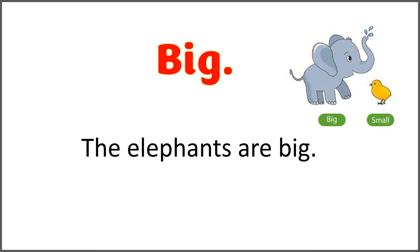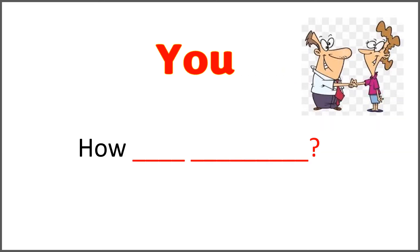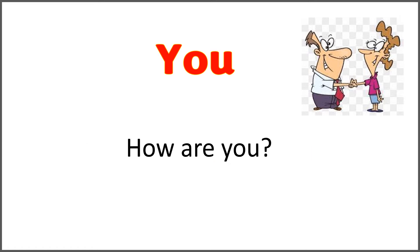As you can see in the illustration, this cute elephant is big and the cute chicken is small. But the elephant is bigger than the chicken. The given word is 'you,' and the sentence is 'how blank blank.' Use 'are' with 'you' to complete the sentence, and it will be a question. How are you?